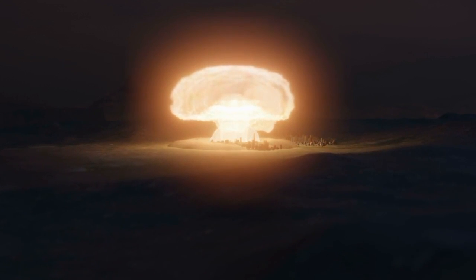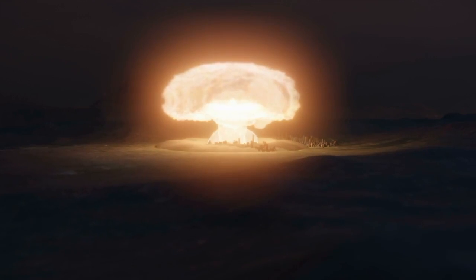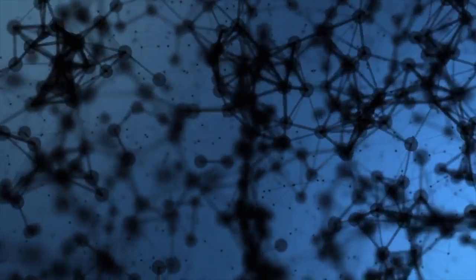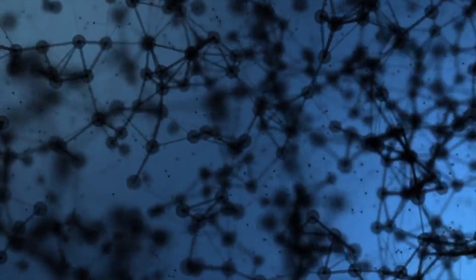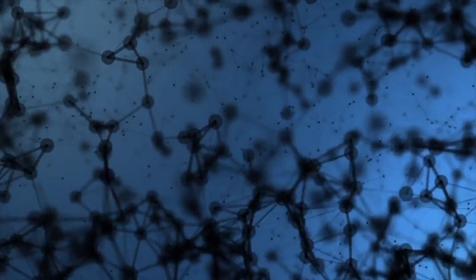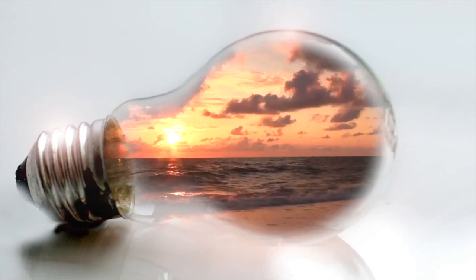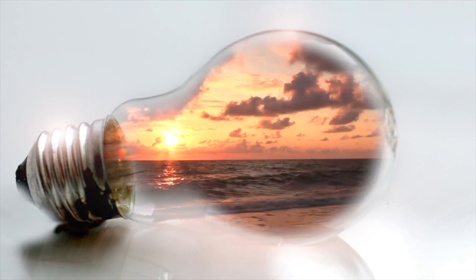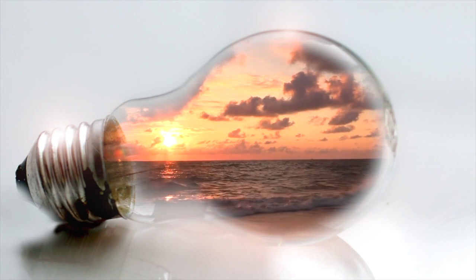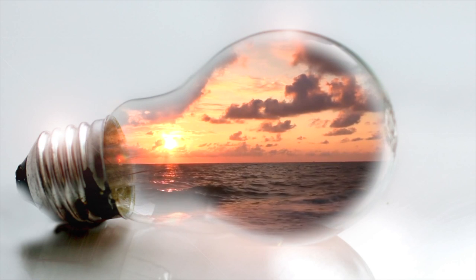When the US performed the Ivy Mike shot and detonated a staged fusion device based on cryogenic liquid deuterium. Ironically this test also provided proof for the existence of two predicted but at the time unobserved elements, Einsteinium and fermium. But hydrogen bombs don't provide practical energy we could use for running a light bulb, rather they destroy power plants.